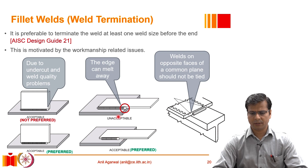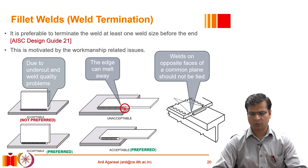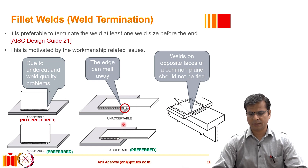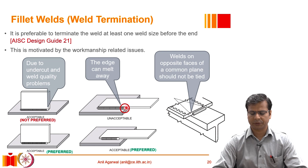A similar situation arises when one plate extends beyond the other. In such a case, it is not even acceptable to stop the weld at that edge — it is in fact mandatory to stop the weld slightly before the edge, because at that edge there is a possibility the material may melt away, reducing the overall cross section and creating unwanted sharp corners at that location.